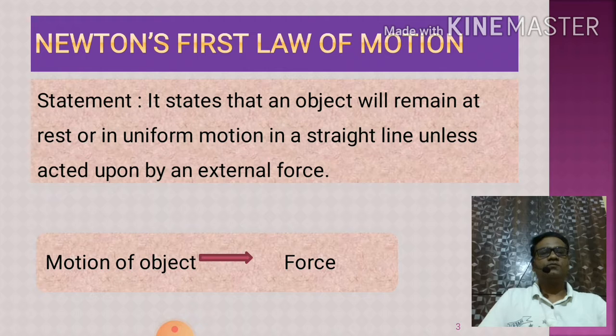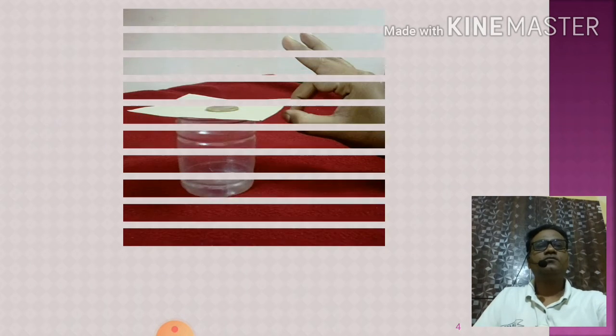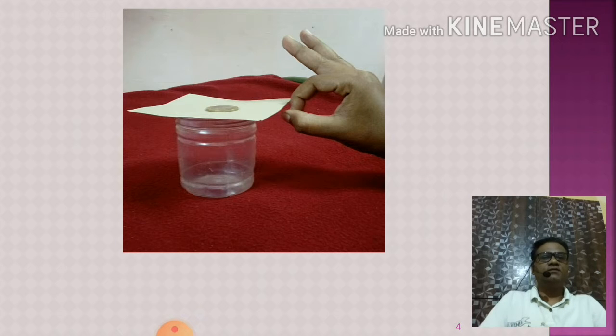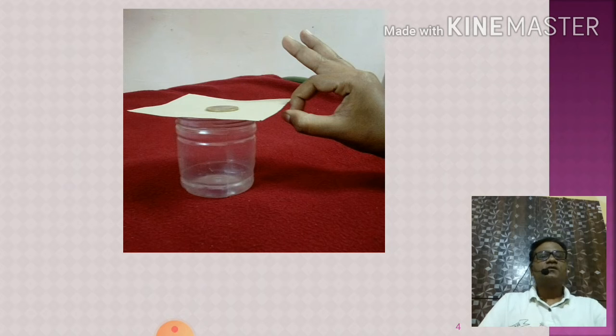So here motion of object is related to force. Now we will see one example. See in this image, one glass is kept and it is covered by a cardboard and a coin is placed on the cardboard.